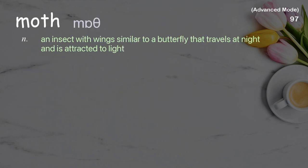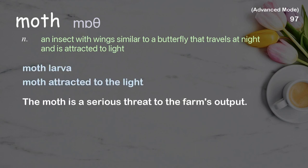Moth: an insect with wings similar to a butterfly that travels at night and is attracted to light. Examples: moth larva, moth attracted to the light. The moth is a serious threat to the farm's output.